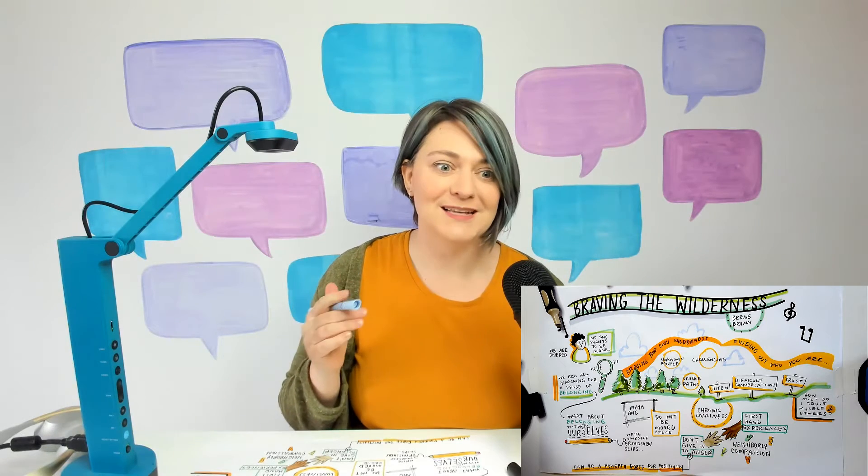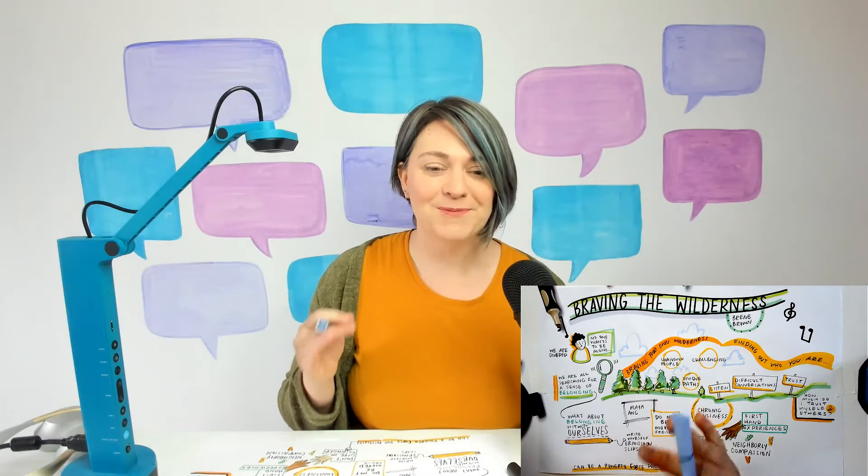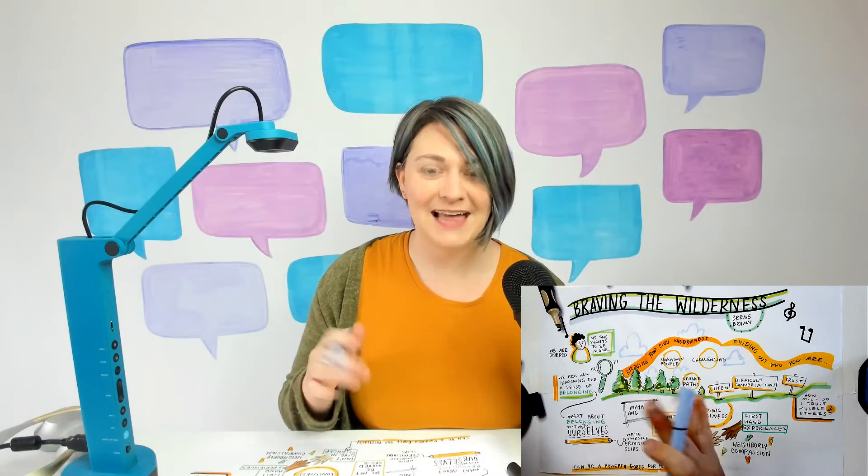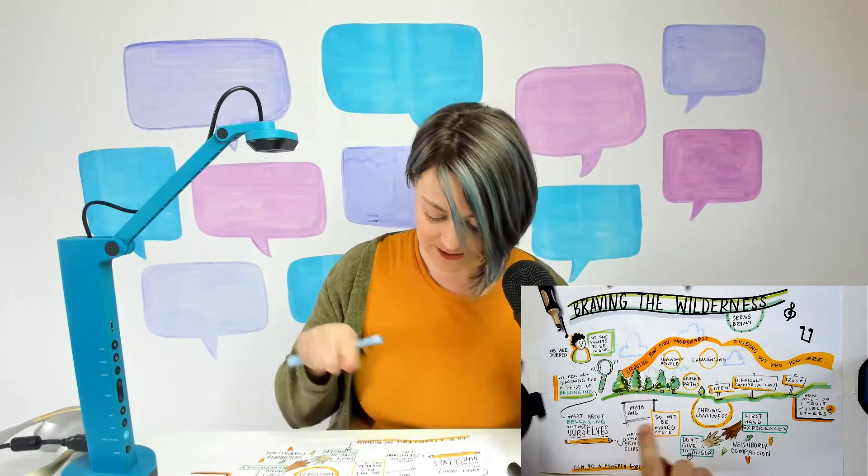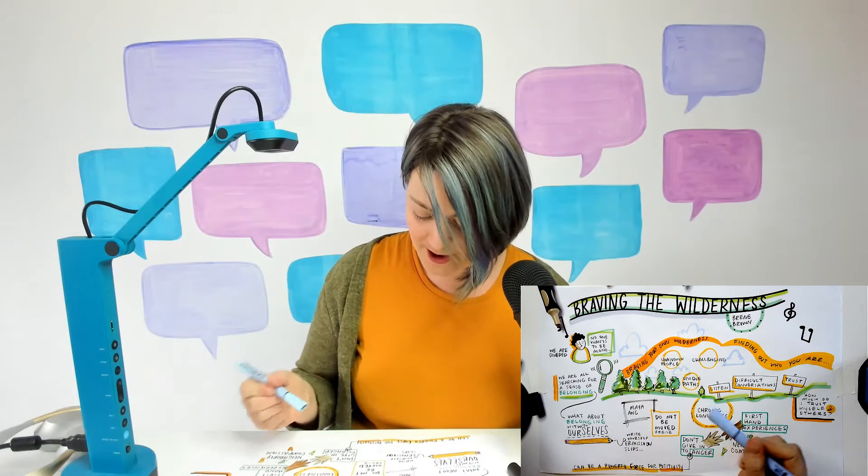That was what I call, that's when I called channeling Bob Ross's happy little accidents. That little pencil was a happy little accident for sure. So I turned those lines into a pencil and I wrote a little thing.